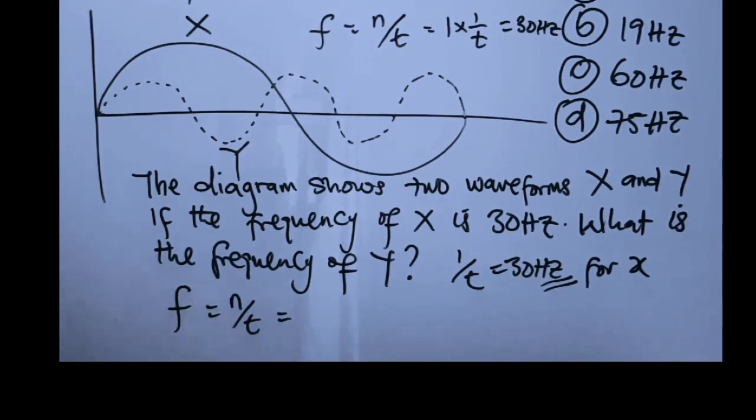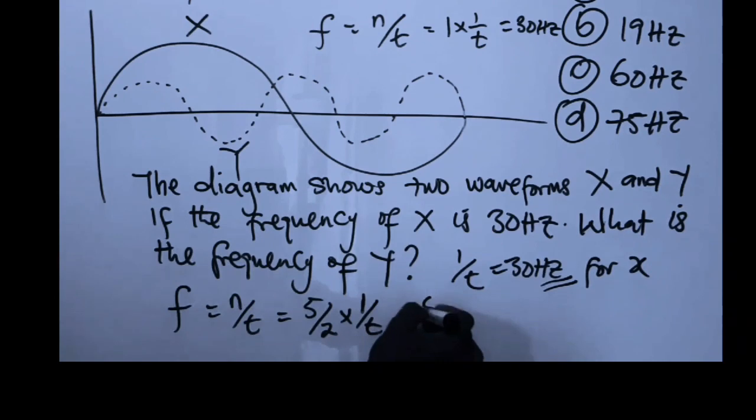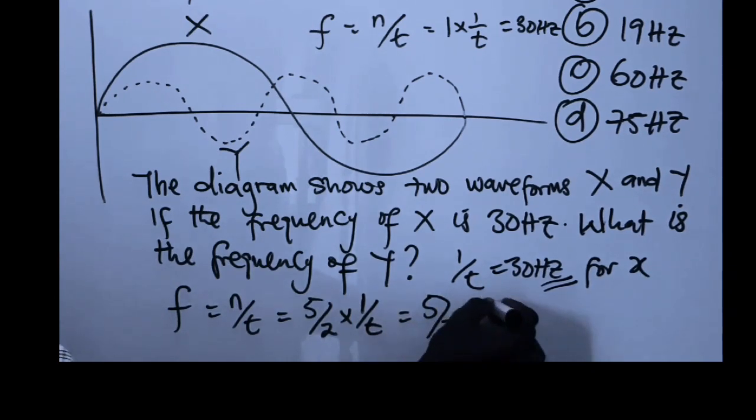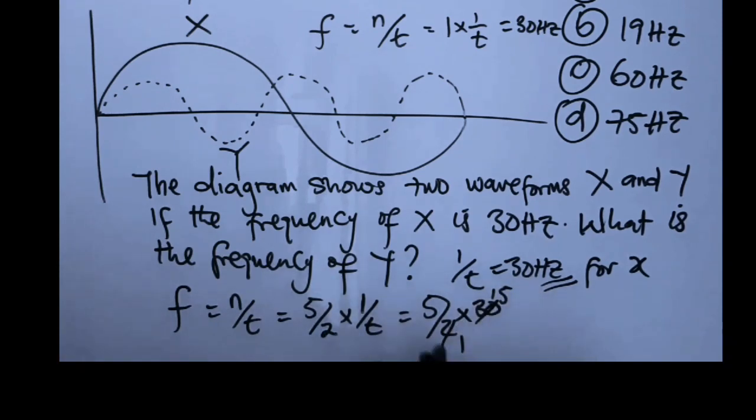So we can say 5 over 2, that is the n, multiplied by 1 over t. But we know that 1 over t is 30, so this equals 5 over 2 multiplied by 30. Two into 2 is 1, 2 into 30 is 15, times 5 gives us 75 hertz.